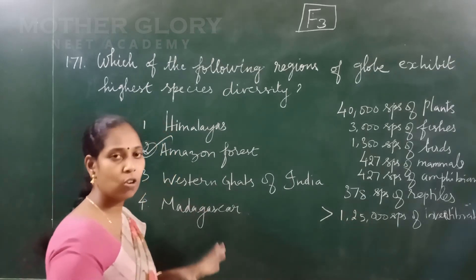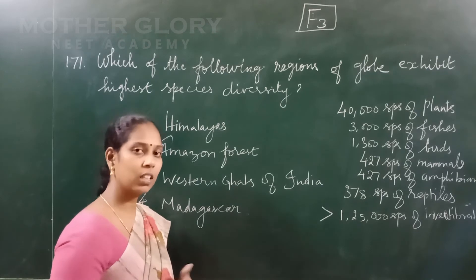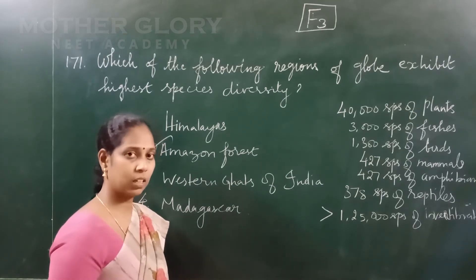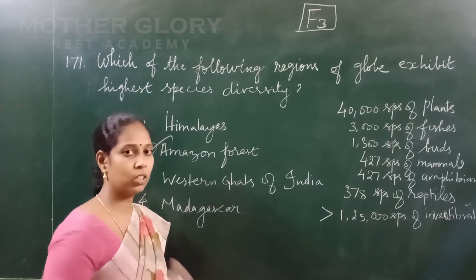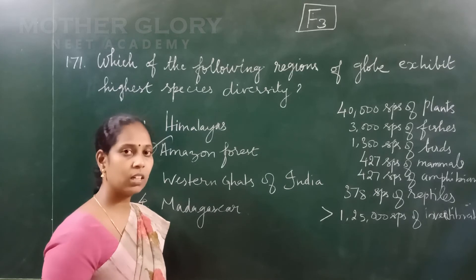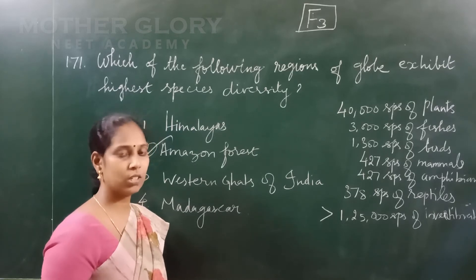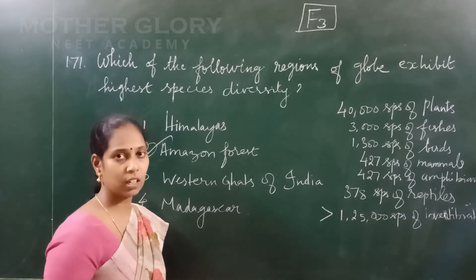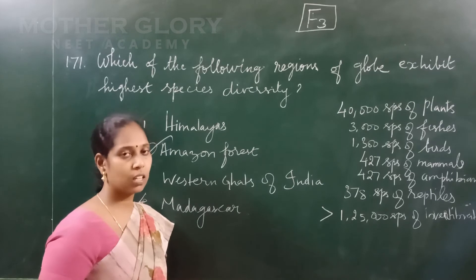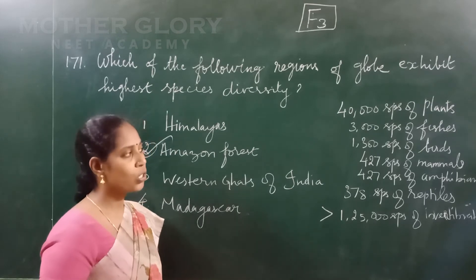There are also around 300 species of mammals found there, and they may have around 5 million species of insects found in the Amazon region.